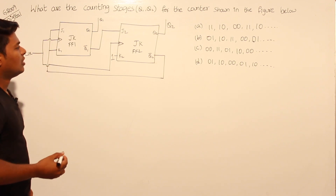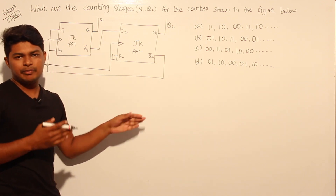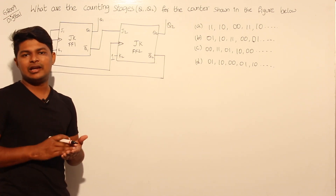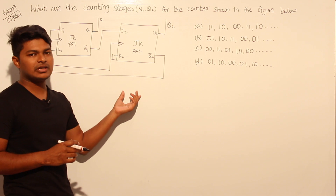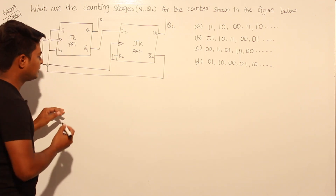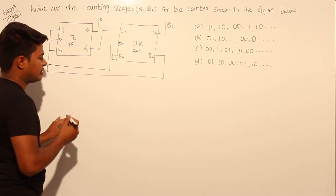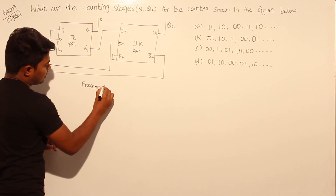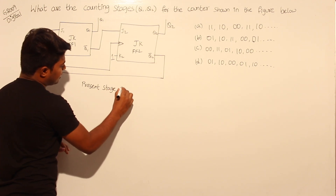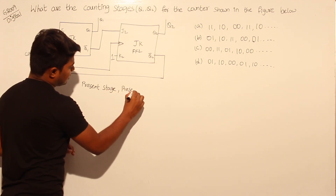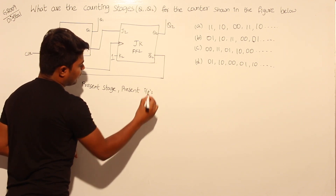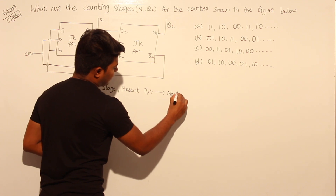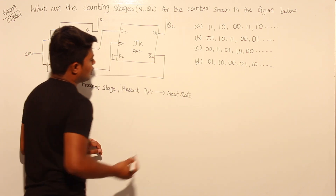Generally, in the case of flip-flops, if you know the present state and present inputs, then only can we figure out the next state. Until and unless we don't know the present state and present inputs, we cannot find the values of the next state. Since these are sequential, we need to know the present state and present inputs.